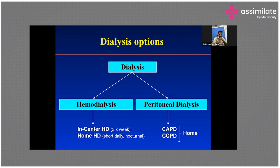In dialysis options, we have hemodialysis and peritoneal dialysis. For hemodialysis, we can go with in-center hemodialysis; home hemodialysis is a new trend in India, with metros like Mumbai, Delhi, Kolkata, Bangalore adopting it. However, the financial investment for home hemodialysis is significant. In-center hemodialysis is the most preferred choice in the Indian population for several important reasons.